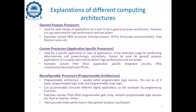General purpose processors support a wide variety of applications but are not optimized for high performance and low power, since they cater to many application types. Examples include MIPS, HCS12, and Intel Pentium series. Custom processors cater to a particular class of applications and have dedicated usage for performing data-intensive and power-hungry calculations.